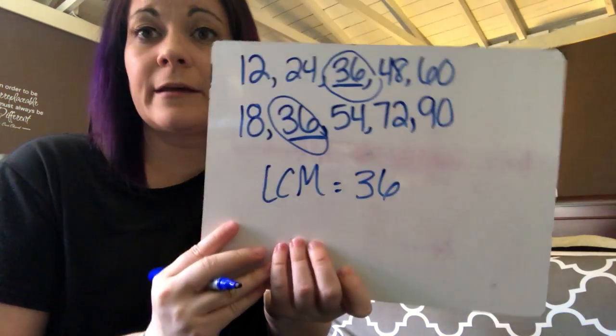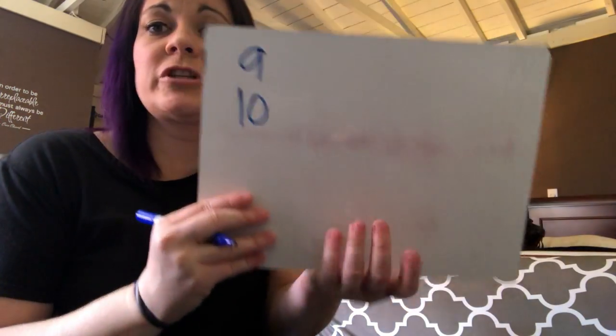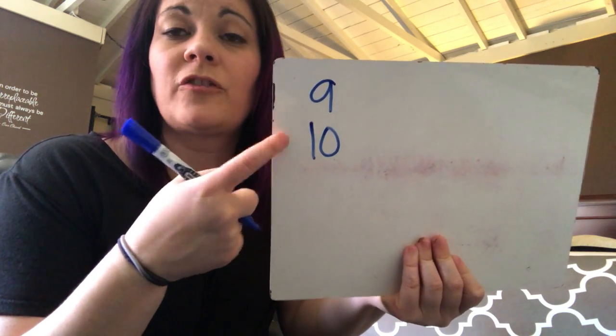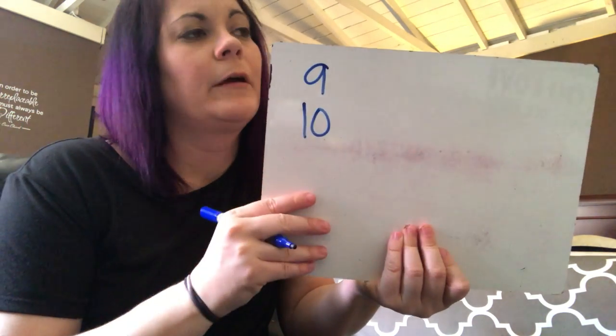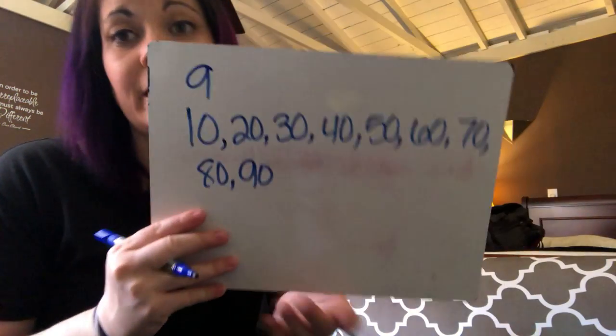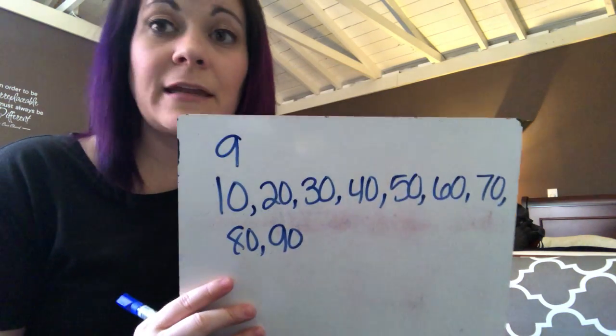Let's find the LCM of 9 and 10. Starting with the highest number, 10: multiples are 10, 20, 30, 40, 50, 60, 70, 80, 90. I recognize 90 is a multiple of 9, so that has to be my Least Common Multiple.